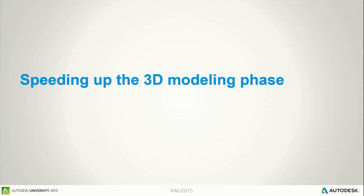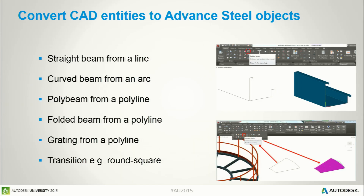Let's go now to the modeling phase. As I said at the beginning, because Advanced Steel is working on top of AutoCAD, this is exactly the same spirit for creating elements. I can create lines and convert lines to beams. I can create arcs and convert these arcs to curve beams. I can even create polylines and convert polylines to polybeams.